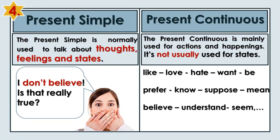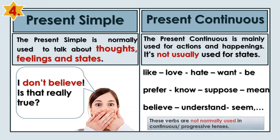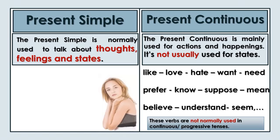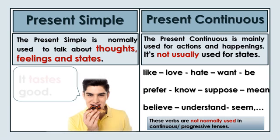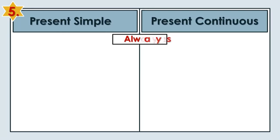Prefer, know, suppose, mean, believe, understand, seem. These verbs are not normally used in continuous progressive tenses. She doesn't seem very happy at the moment. It tastes good.